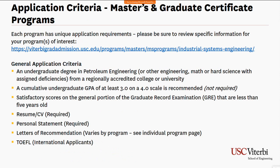For formal admission, the general criteria require an undergraduate degree in engineering, math, or science from a regionally accredited college or university, with a cumulative GPA of at least 3.0 on a 4.0 scale — recommended but not required. If your GPA falls below 3.0, we encourage you to strengthen your application through the GRE, personal statement, and strong letters of recommendation. The GRE general test is required — exams taken less than five years ago are still valid — though there is no minimum GRE score; it is one component of the holistic review.